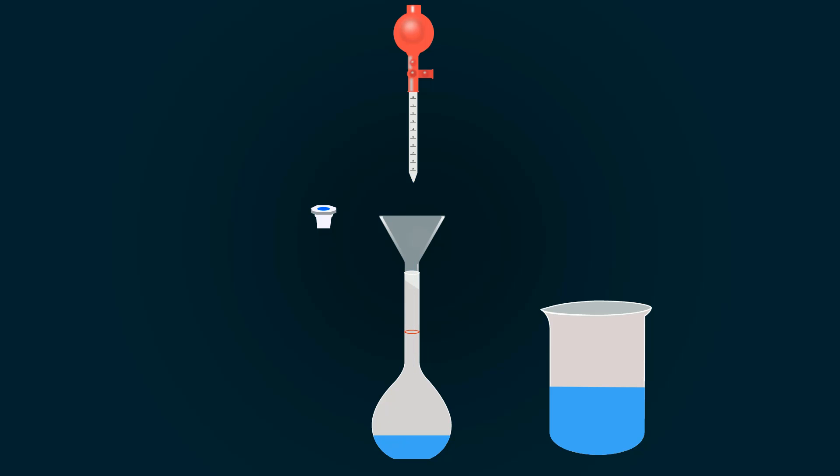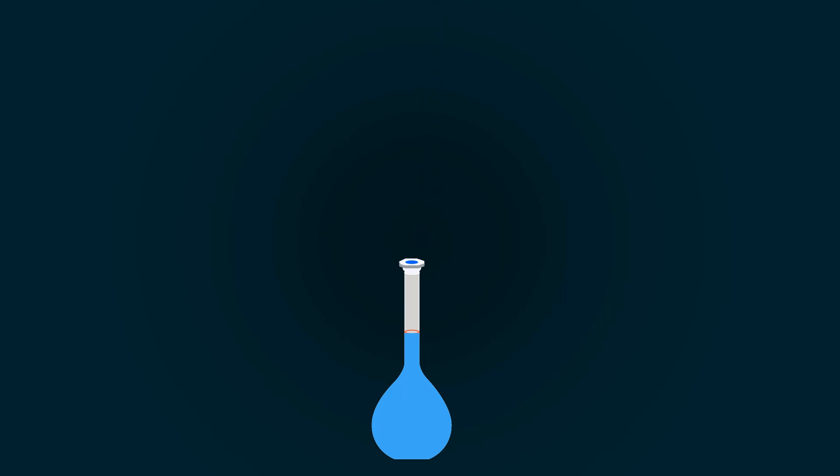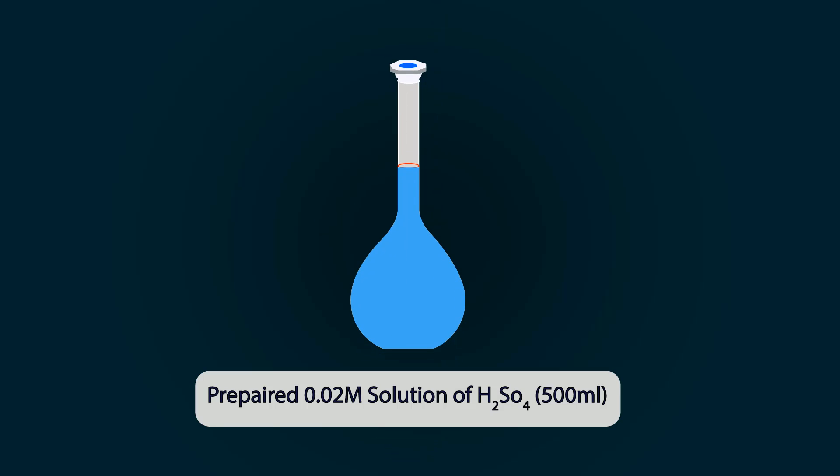You can clearly see a red point which indicates 500 milliliters. Put more distilled water so you can fill it up to the mark. Now you have successfully prepared 0.02 molar solution of 97% H2SO4 with the volume of 500 milliliters.